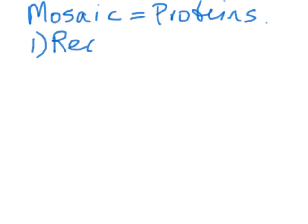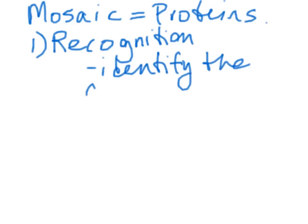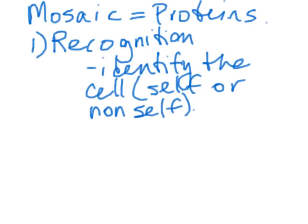The mosaic proteins have three different functions. One: recognition proteins identify the cell. In our body, we recognize cells as being self, meaning they belong to us, or foreign invader cells are recognized as non-self. This assists our immune system in identifying cells that need to be destroyed and cells that can stay.